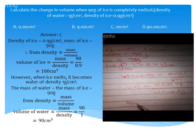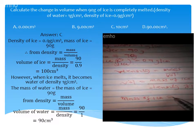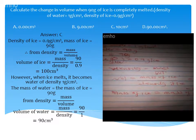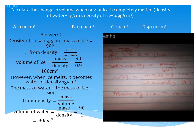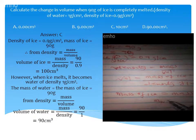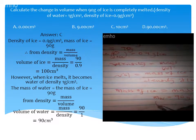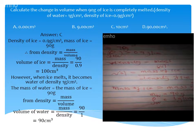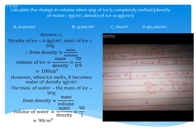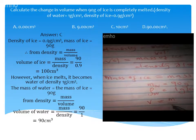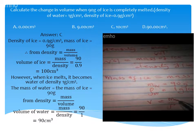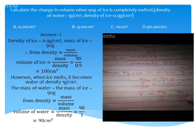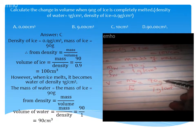The mass of ice will be equal to the mass of water, because by the time it melts it is going to have the same mass. So our mass of water is 90 grams. The density of water is given as 1 gram per cm³. We can calculate the volume of water: volume equals mass of water over density of water, which is 90 grams over 1 gram per cm³.